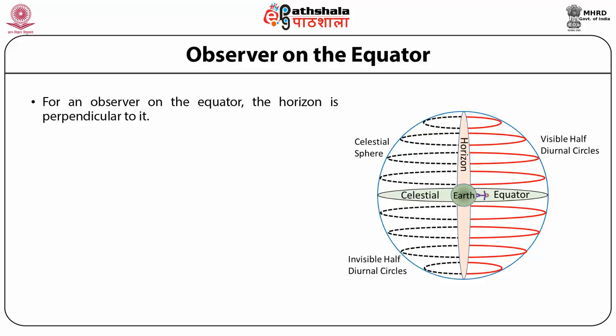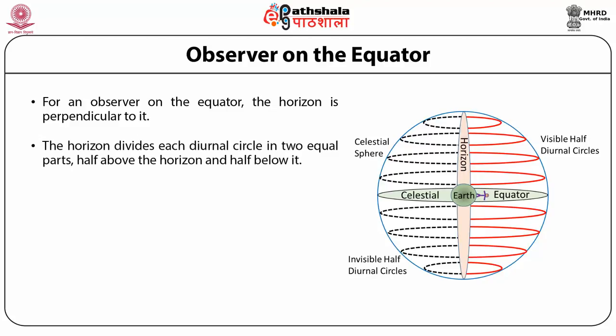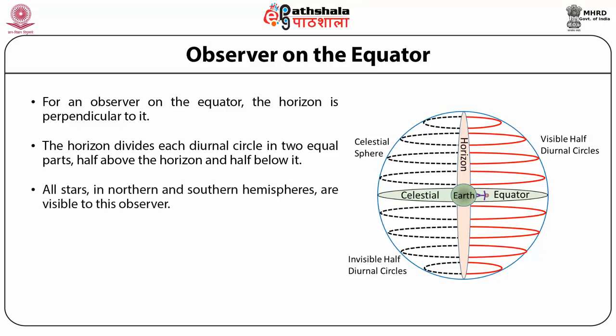For an observer on the equator, the horizon is perpendicular to the celestial equator, as shown in the picture. The horizon divides each diurnal circle into two equal parts — half above the horizon and half below. All stars in both the Northern and Southern Hemispheres are visible to the observer, but each is visible only half the time, and set for the other half.